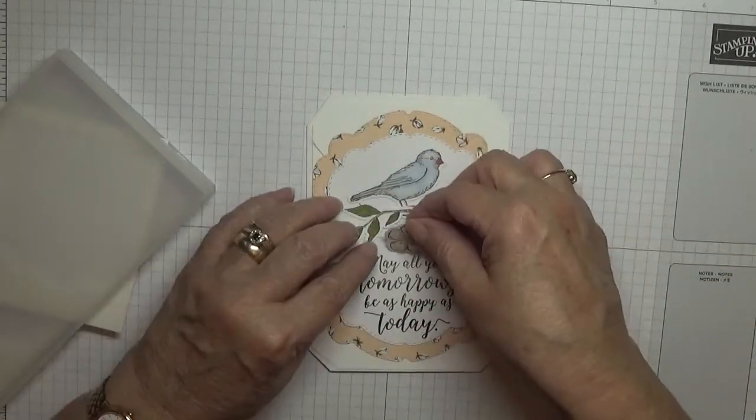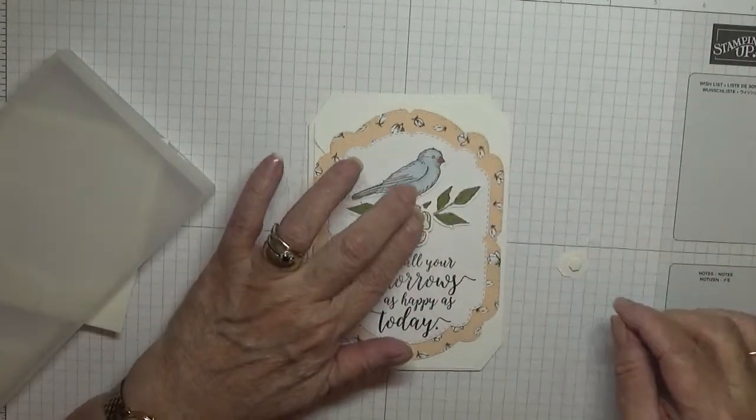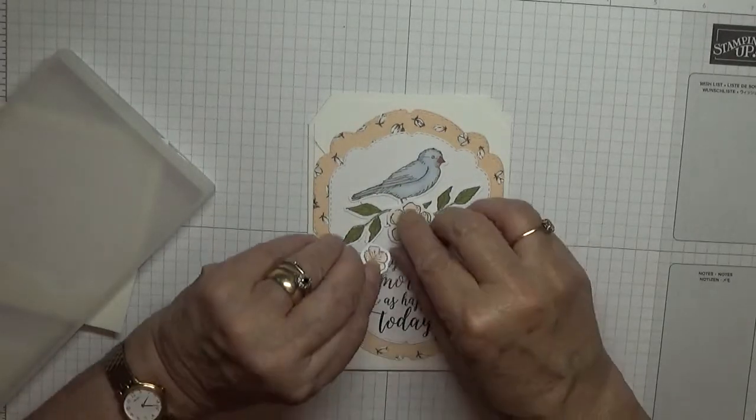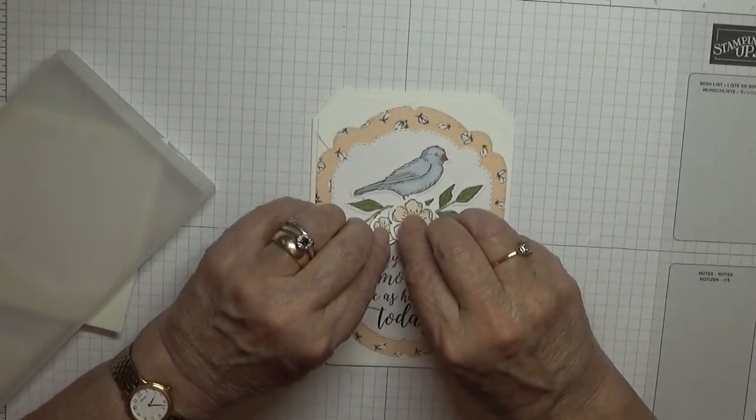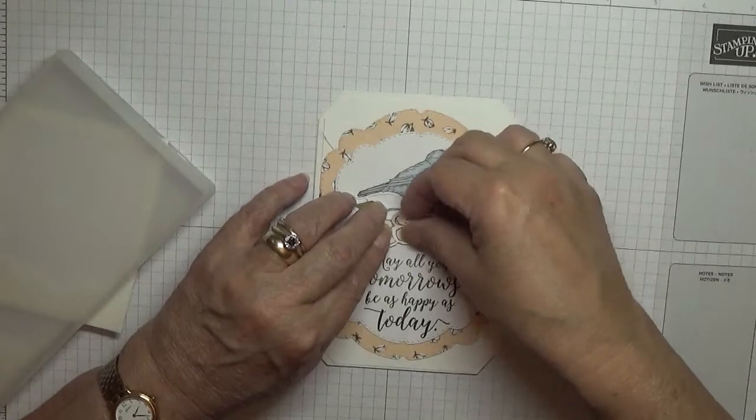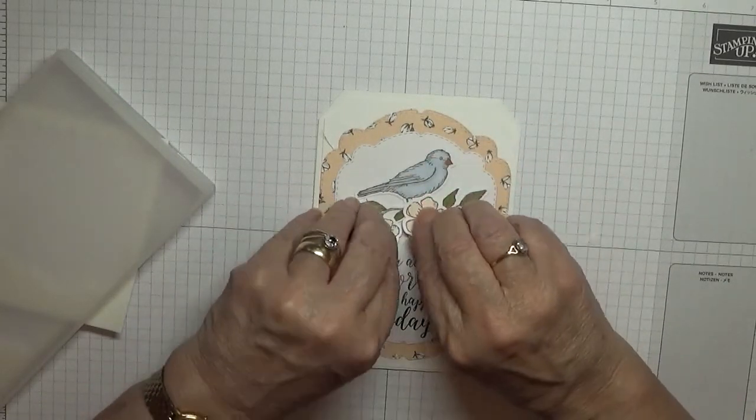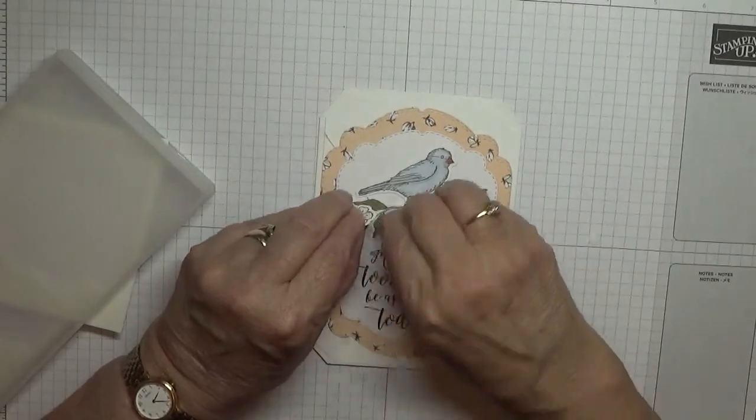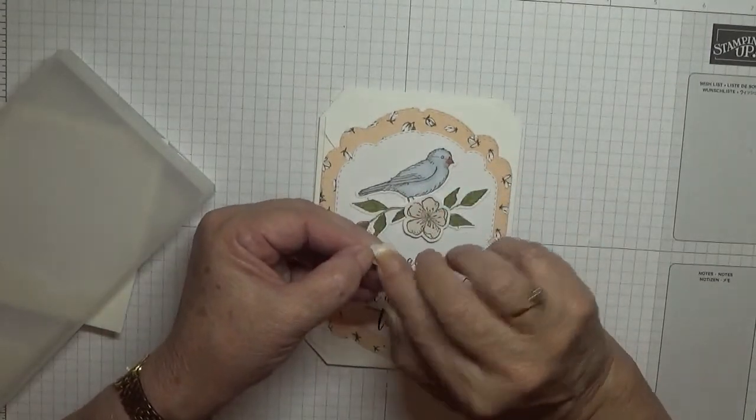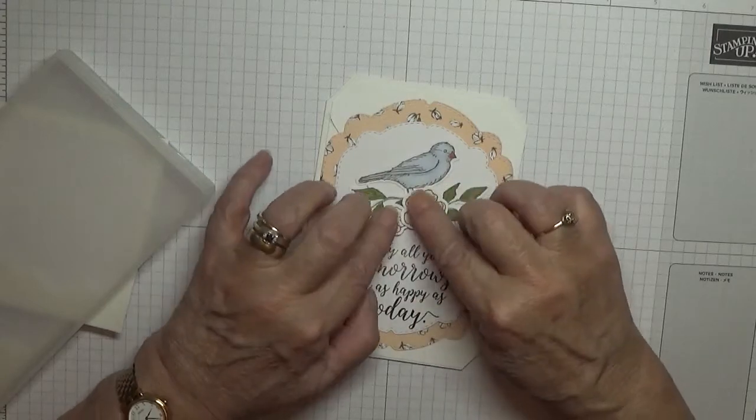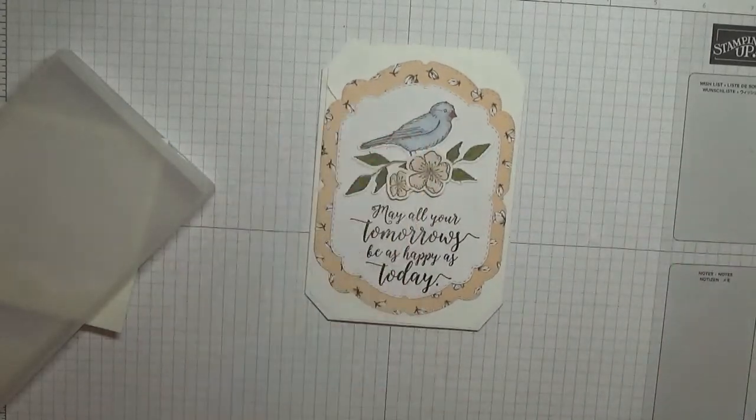So we'll put the big one on first and put that right in the middle, and this little one we will put to the side. Put that to the side of it. There we are.